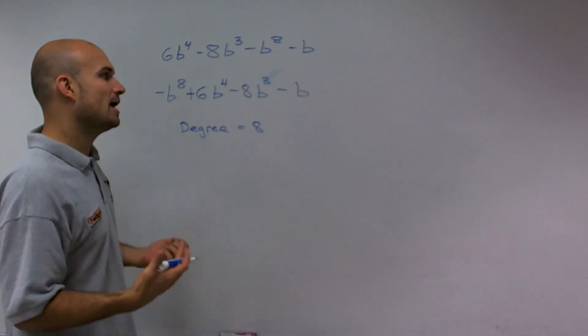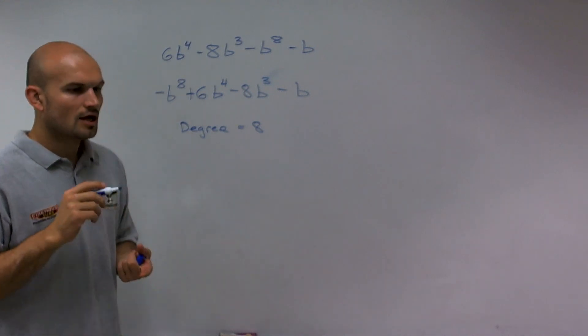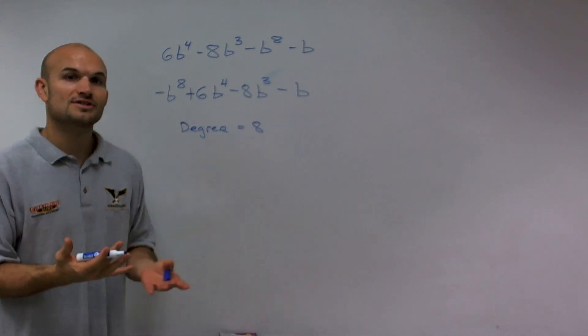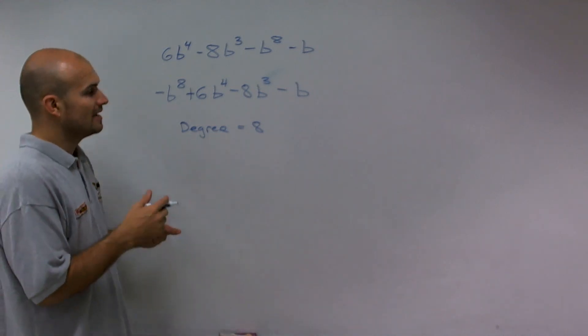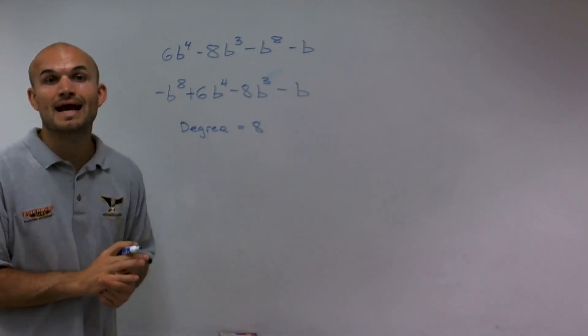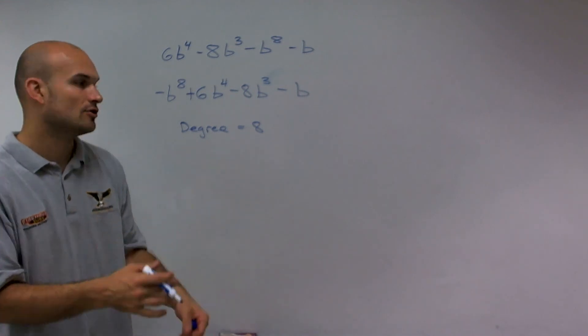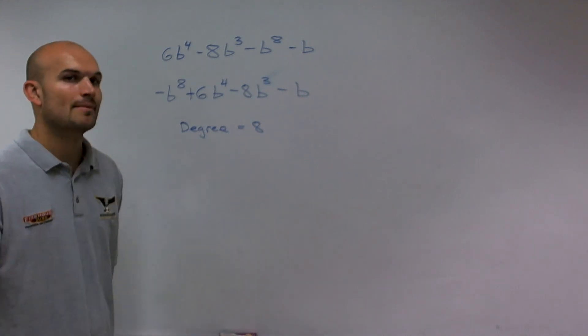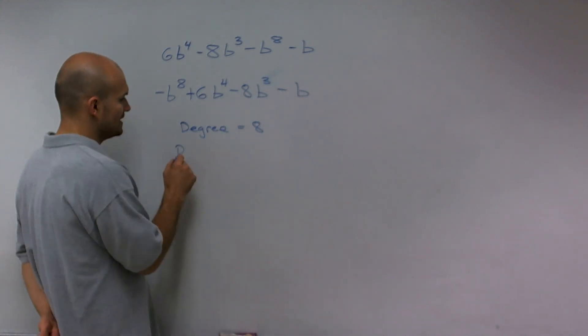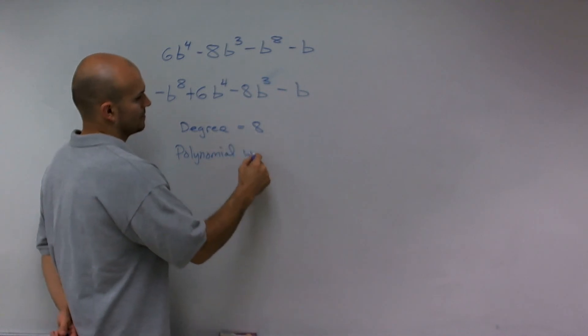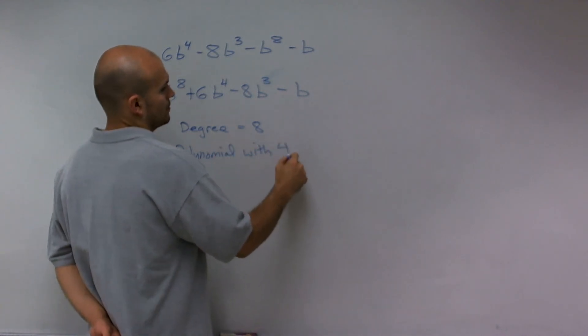Then I need to classify the polynomial. When a polynomial has one term, we call it a monomial. When we're adding two terms, we call it binomial. When we add three terms, we have a trinomial. And anything with four or more terms, we say polynomial with however many terms we have. So this is going to be a polynomial with four terms.